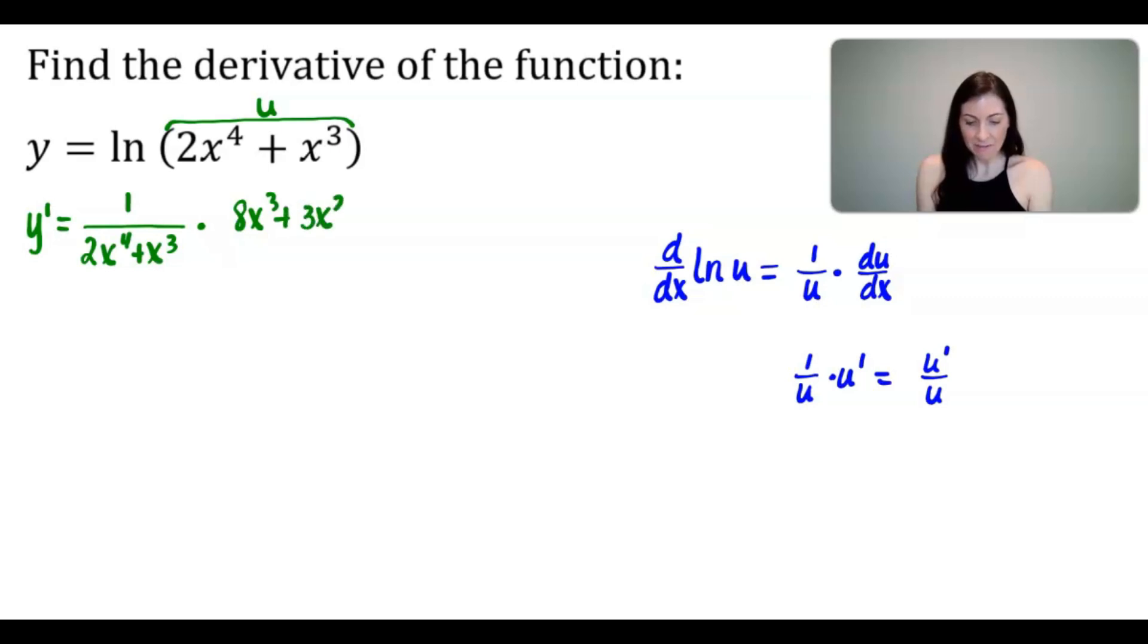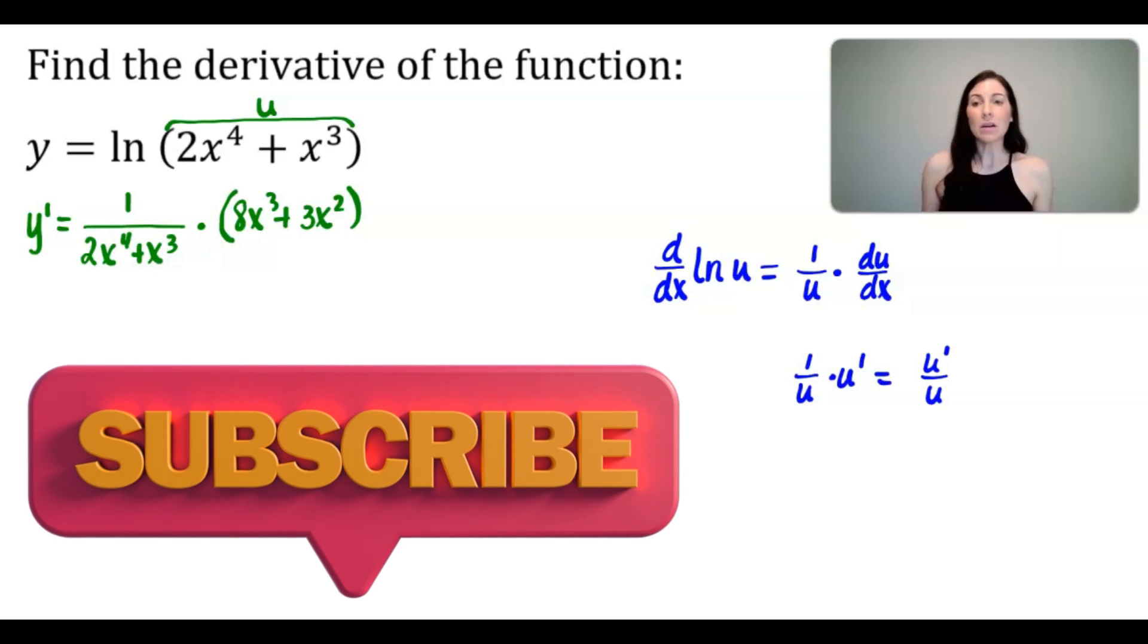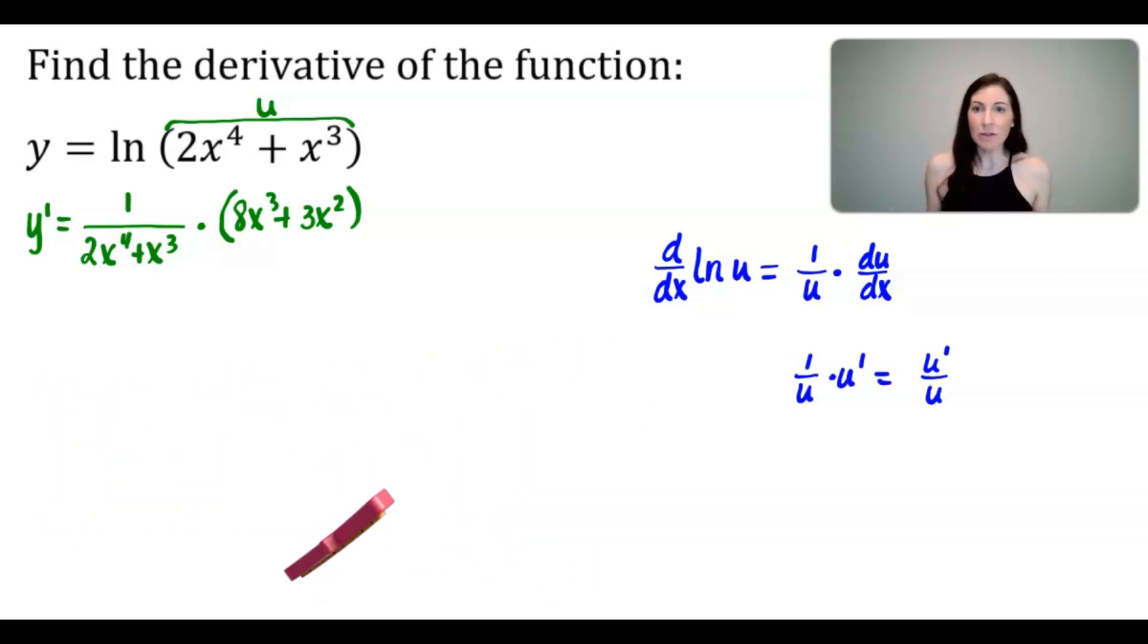And as I've showed it to you here, this is a common answer that my students give. And I always tell them, you need to put parentheses around that derivative of u, because you want to multiply by the quantity 8x to the 3rd plus 3x squared. So just keep that in mind. Now from here, sometimes you can just leave it like that if you don't need to simplify it. But let's talk about how you would simplify this if you did want to continue.